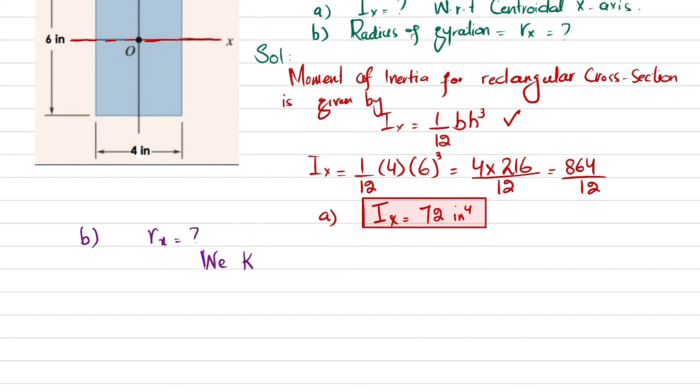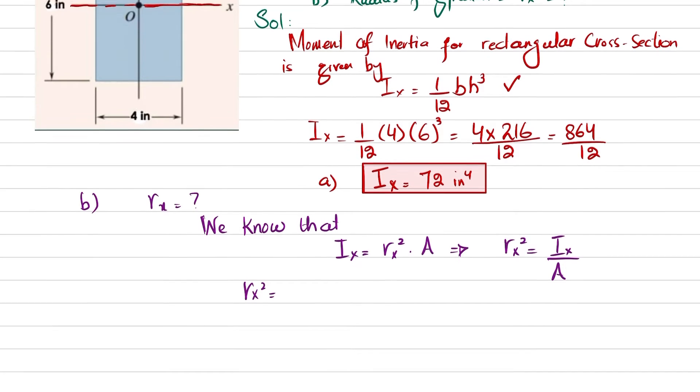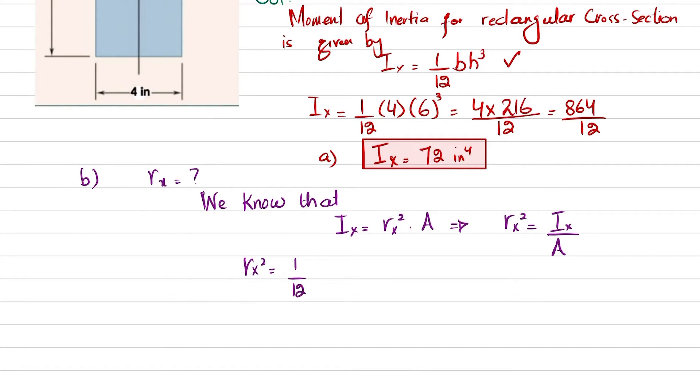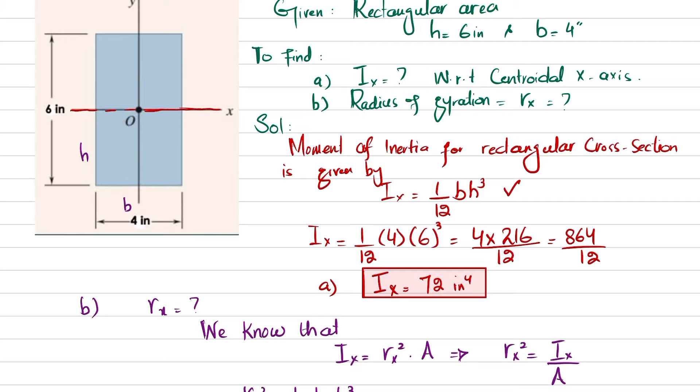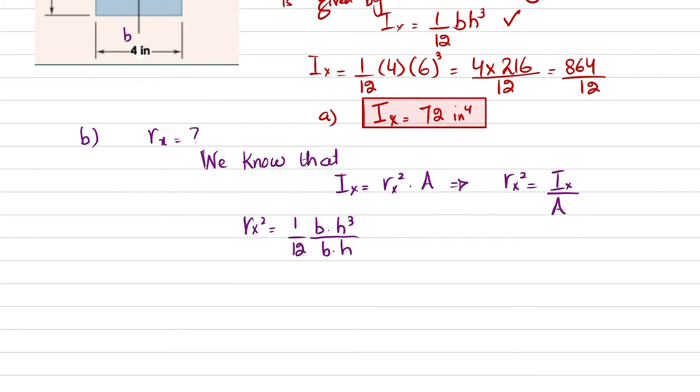We know that moment of inertia about x-axis is equal to rx squared, radius of gyration squared, multiplied by the area. So from here we are interested to find out rx, so rx squared is equal to Ix divided by A. So rx squared, moment of inertia about centroidal axis is one over twelve b into h cube divided by area. For this rectangular cross section area will be equal to b into h.